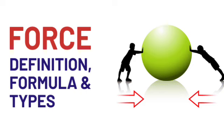Force has both magnitude and direction. An adult person applies more force on an object while a child applies lesser force on the same object. It is clear that force can be larger or smaller; the strength of force is expressed by its magnitude. The direction in which an object moves, or the direction in which the object attempts to move, is called the direction of force.